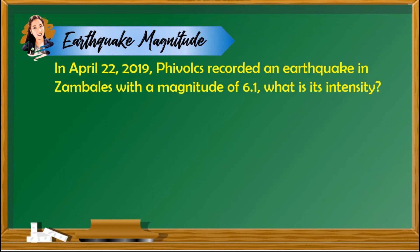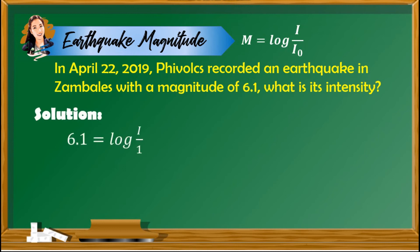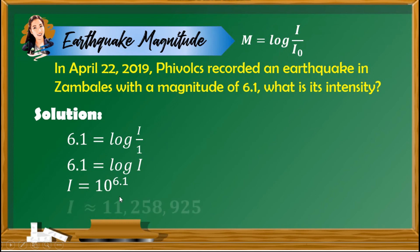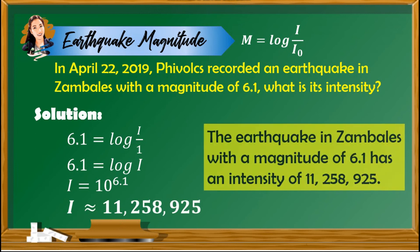Another example: on April 22, 2019, PHIVOLCS recorded an earthquake in Zambales with a magnitude of 6.1. What is its intensity? Following the formula, 6.1 equals the logarithm of I over 1, which simplifies to 6.1 equals the logarithm of I. Converting to exponential form, I equals 10 raised to 6.1, which equals 11,258,925. So the earthquake in Zambales with magnitude 6.1 has an intensity of 11,258,925.